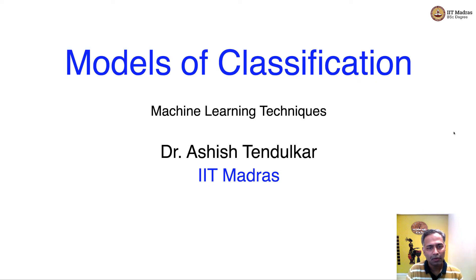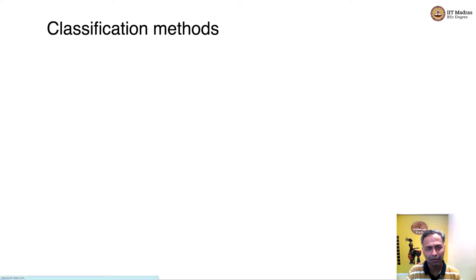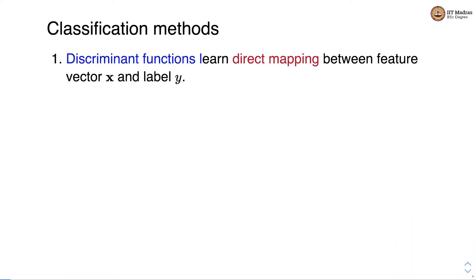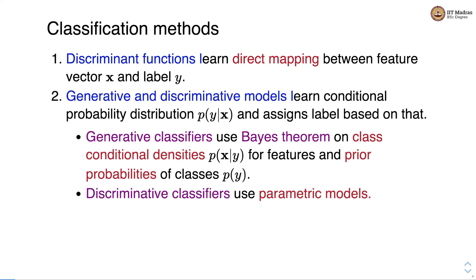Namaste. Welcome to the next video of machine learning techniques course. In this video, we'll start a new topic which is models of classification. We'll study three different methods of classification: discriminant functions that learn direct mapping between feature vectors and labels, and generative and discriminative models that learn conditional probability distribution and assign class labels based on that.